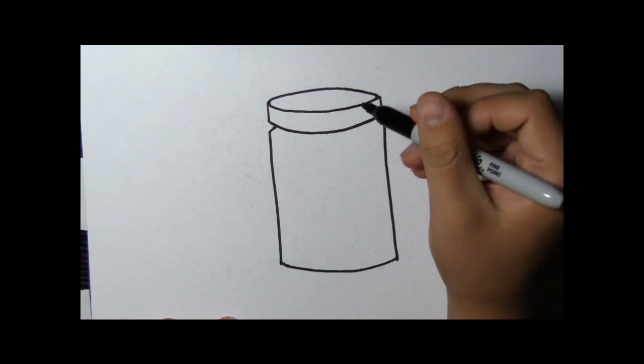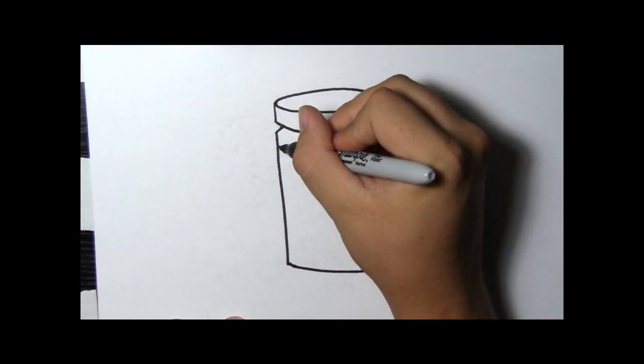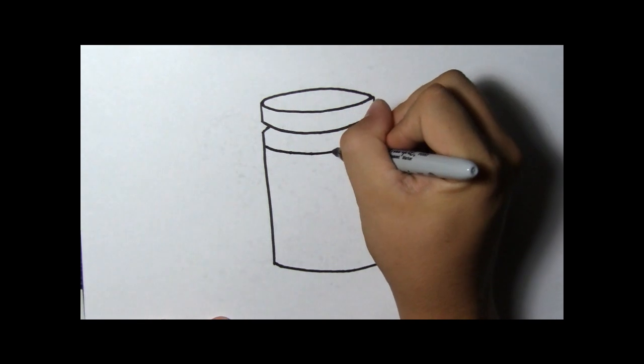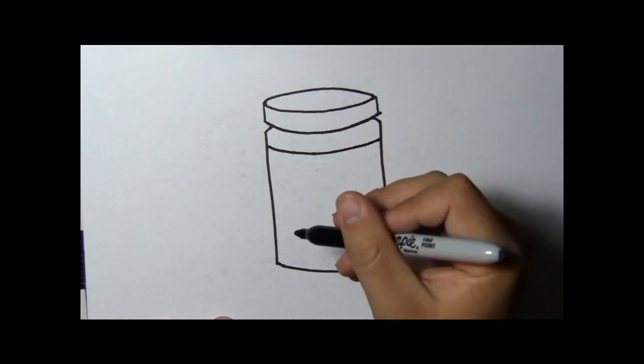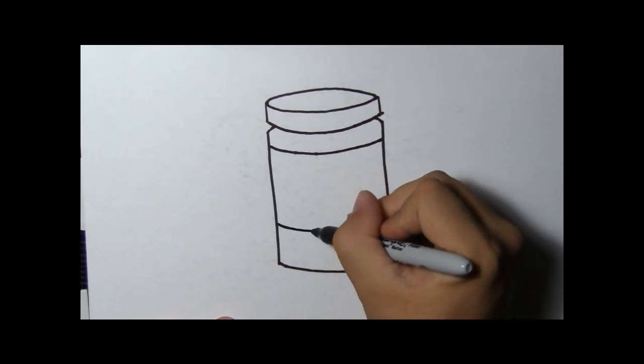Some jars have labels. I'm going to draw a label on mine. It's just another half of an oval. And another one.